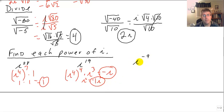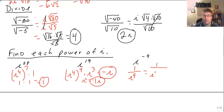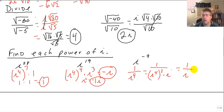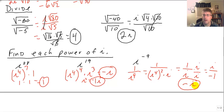i to the negative 9th is a bit more challenging. This is a reciprocal, so it's 1 over i to the 9th. i to the 9th in the denominator: two times through the cycle gives i to the 8th, leaving 1 over i. To get i out of the denominator, multiply top and bottom by i, giving i over i squared. Since i squared is negative 1, our final answer is negative i.